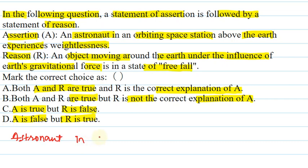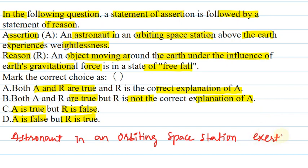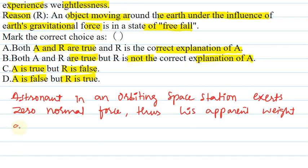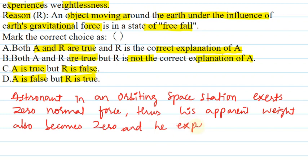In an orbiting space station, the astronaut exerts zero normal force, thus his apparent weight also becomes zero, and he experiences weightlessness.